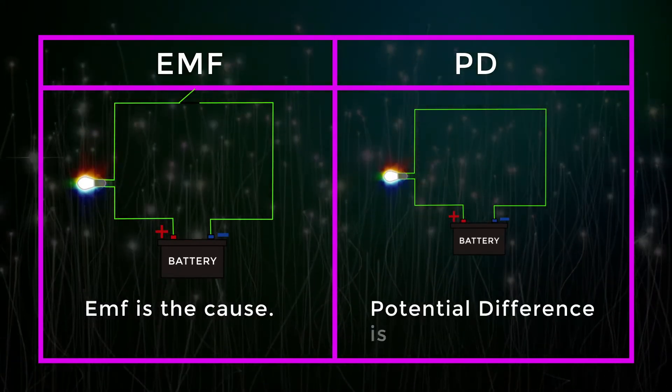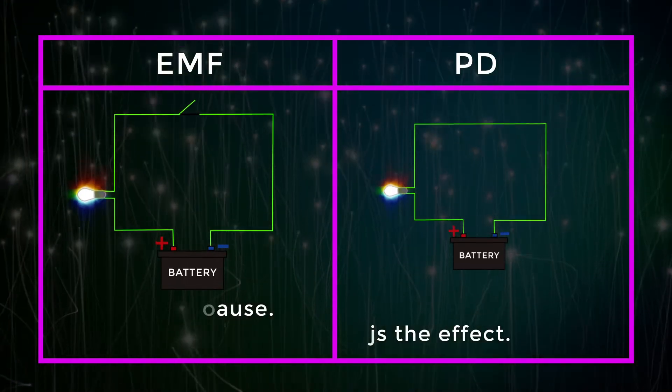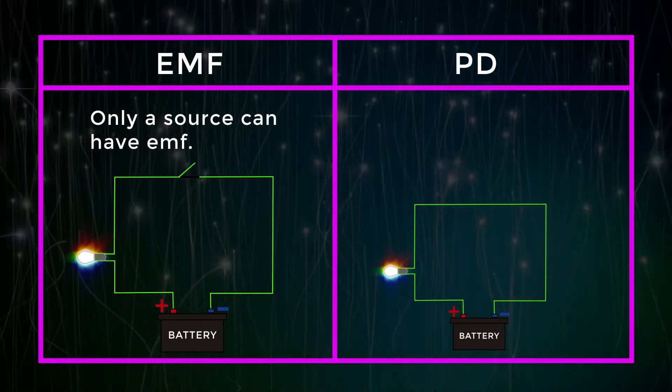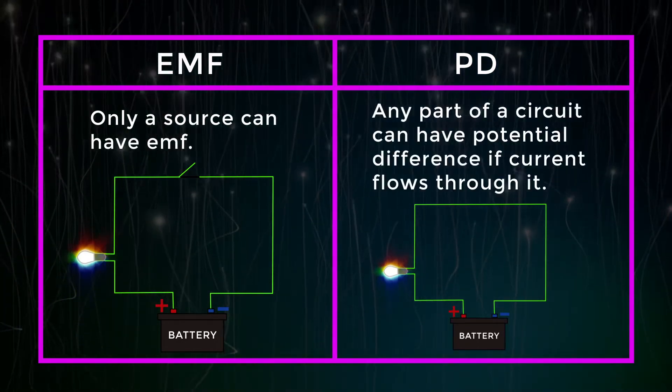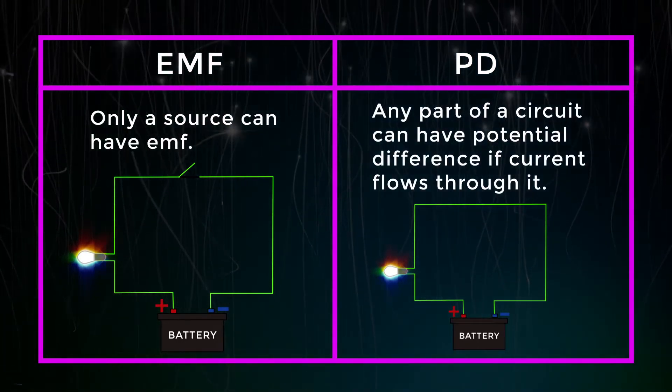EMF is the cause. Potential difference is the effect. Only a source can have EMF. Any part of a circuit can have potential difference if current flows through it.